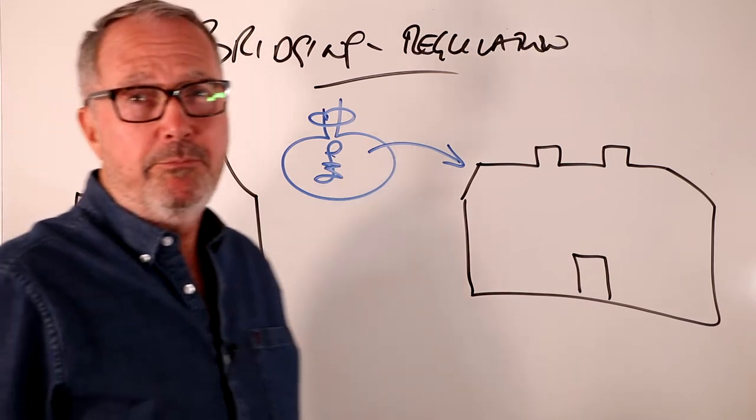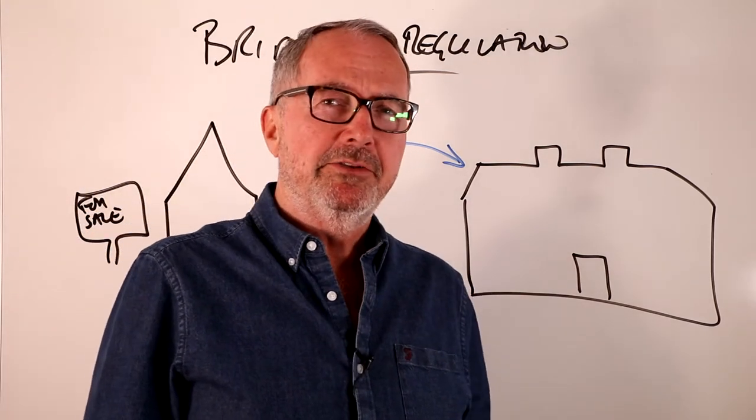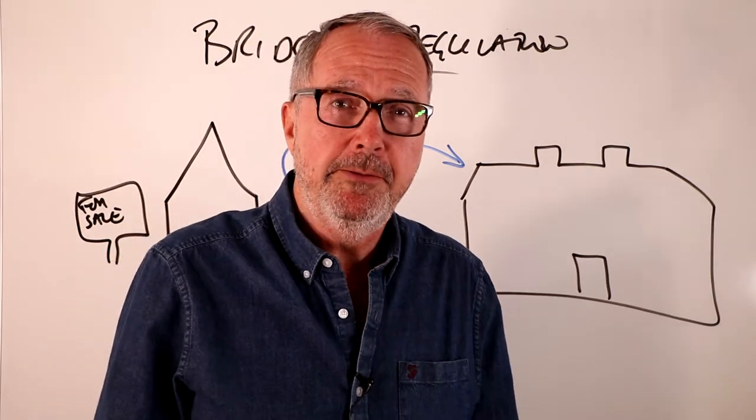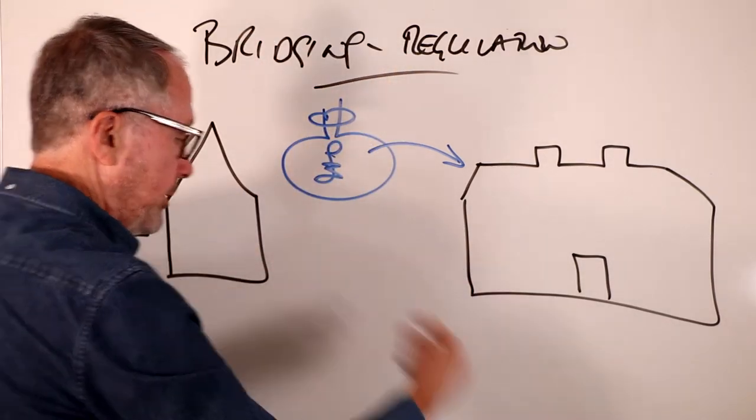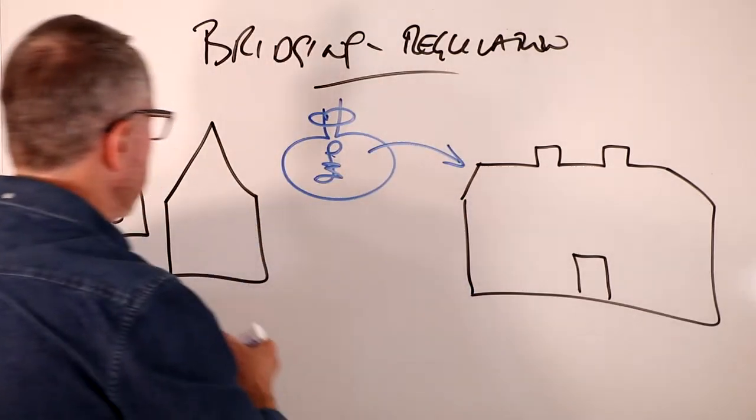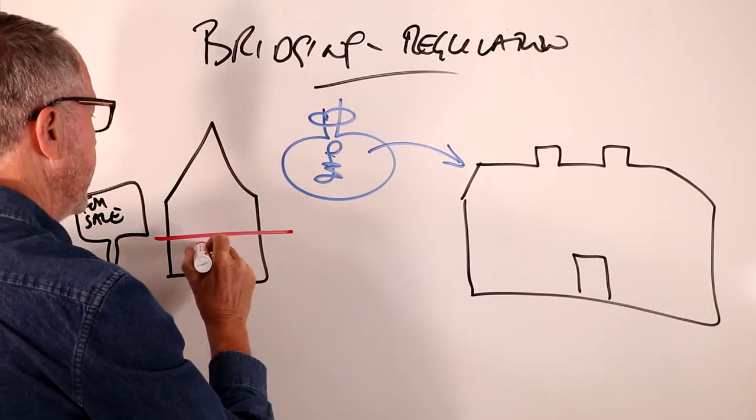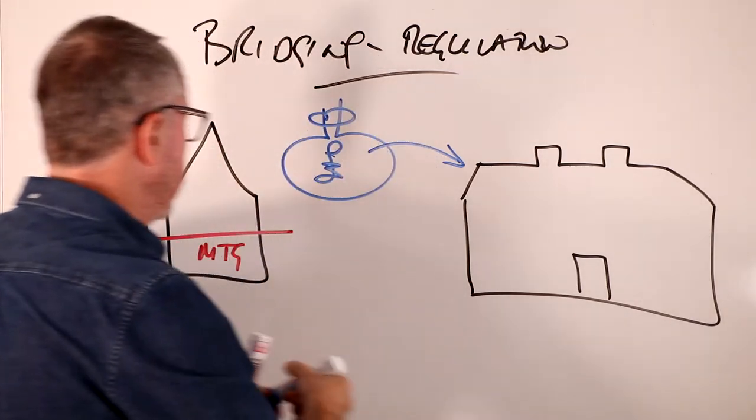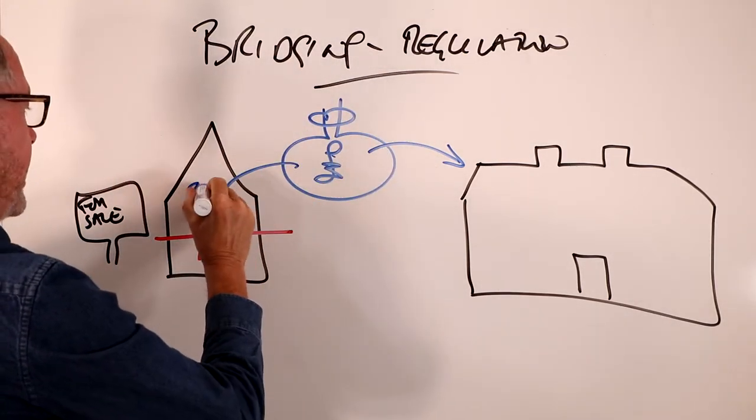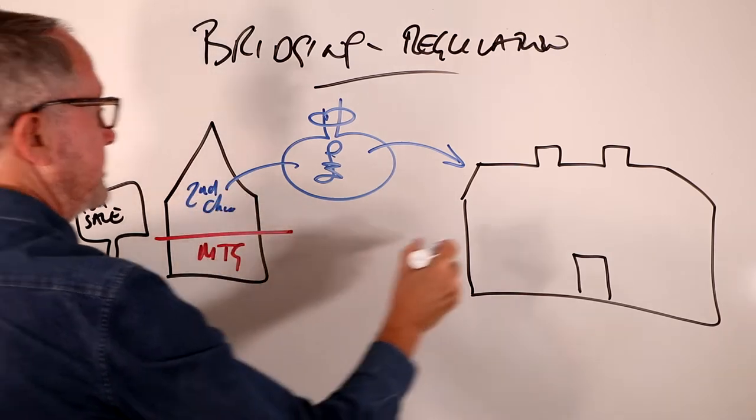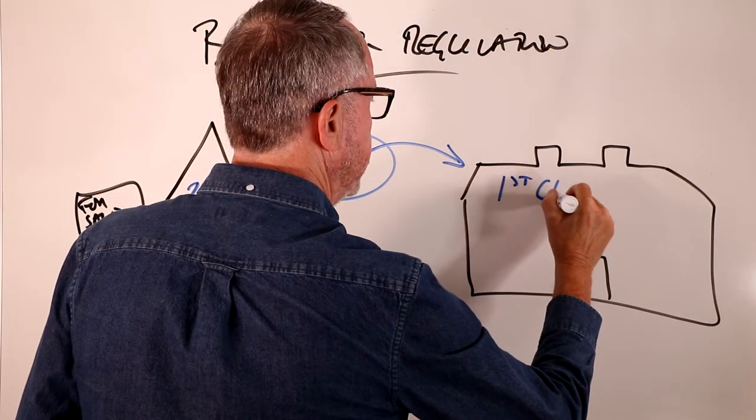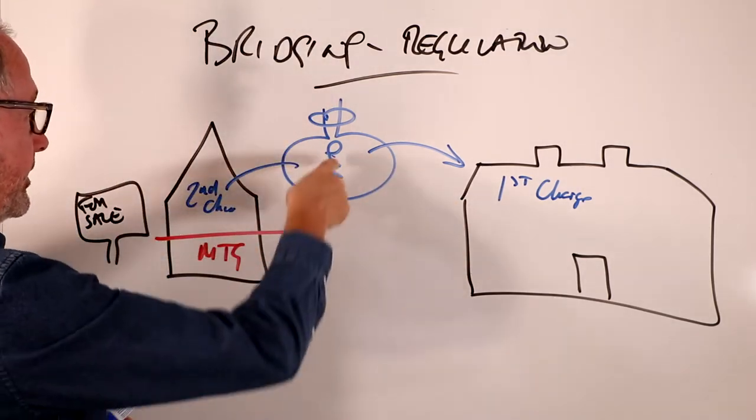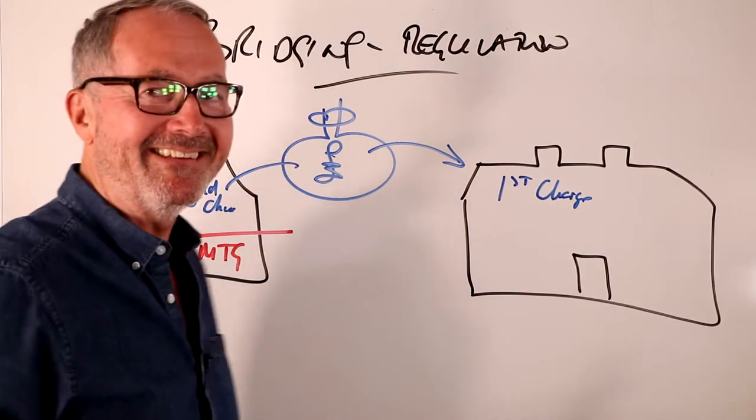So that's how bridging finance providers work. Now they do secure their financing, of course they do. They'll take charges out on the property. It may well be that you've already got a mortgage on the first house, more than likely. So what they'll probably do then is they'll take maybe a second charge on that one, and they might do a first charge on that one, a temporary charge, just to secure the monies. Because they're not going to lend their money without securing it.